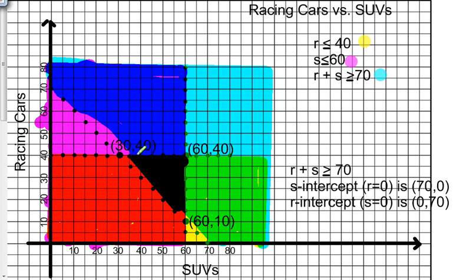So now you can see I have one very, very dark region here where all three of my graphs have overlapped. This is called the feasible region. This is the region where my solutions are likely to appear.